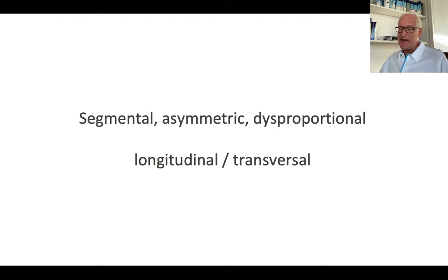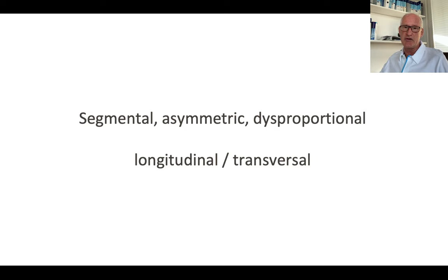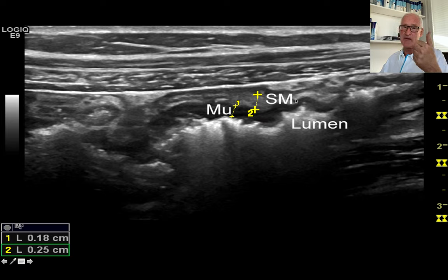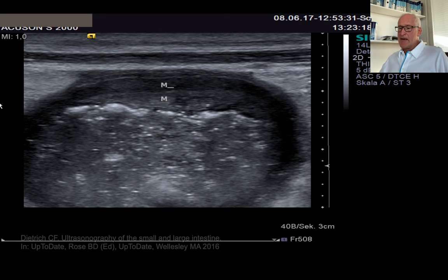Now we go into detail: ultrasound provides not only thickening or normal bowel wall layers like CT and MRI, but segmental, asymmetric, disproportional, longitudinal, and transversal views of certain bowel wall structures. Here you can see the lumen, mucosa, submucosa, and an asymmetric thickening — the lumen is displayed by air in the bowel lumen. This asymmetric thickening is typical for Crohn's disease, and may also be seen in tuberculosis or rarely actinomycosis. Within the bowel wall, the asymmetry at a certain part of the wall is also an eye-catching feature of Crohn's disease.